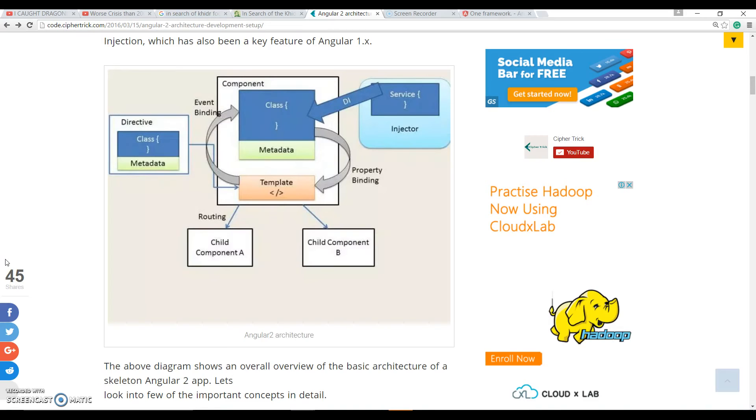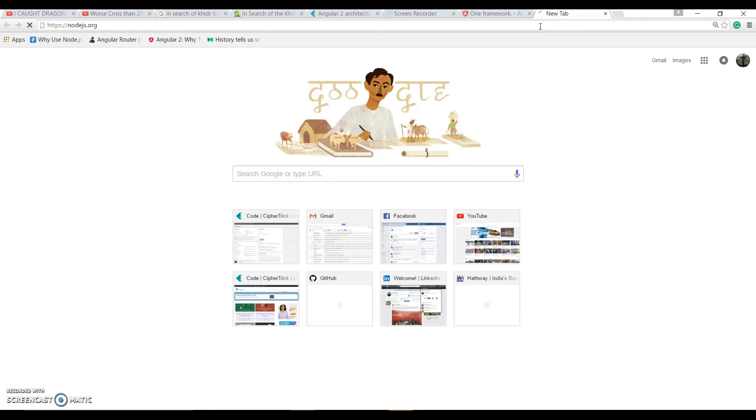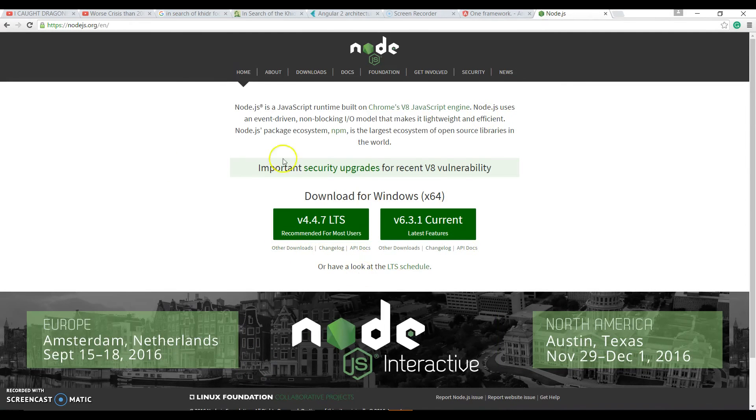Basically you need to have Node.js. You can go over to this website and download the version you require. I would recommend the LTS version, but I am using the latest current version, though I have been facing a few issues related to NPM. Node.js comes with a tool NPM that is used as a package manager in Angular 2. And I think that is it, what we require to run our Angular 2 app.